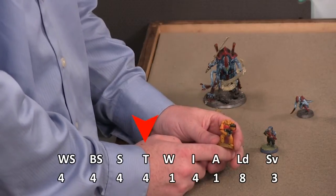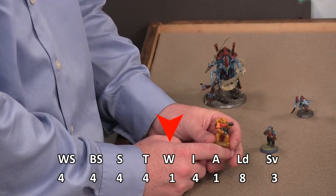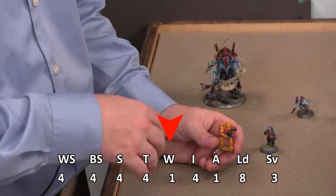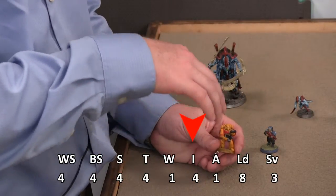Toughness again, four. Wounds is one. That's the average. Most people are going to only have one wound. If you get more than one wound, it's typically a really, really good thing.